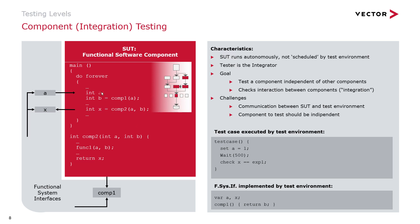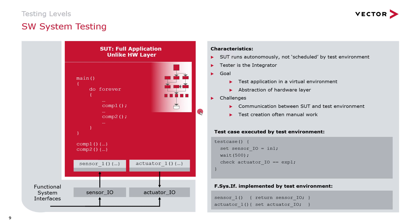If we have done component tests, we can also do component integration tests, where we test multiple components — for example, component one and component two together. After that, we can go over and do software system testing. In a software system test, our goal is to test the whole application unlike the hardware layer. We want to abstract the hardware layer to create a virtual application that we can run on a PC instead of the hardware device.